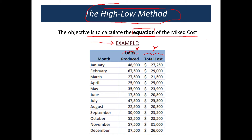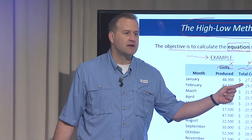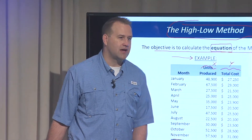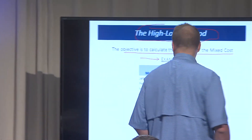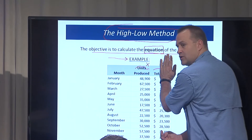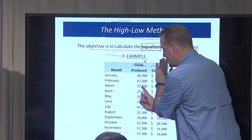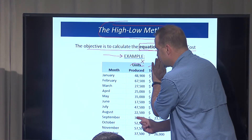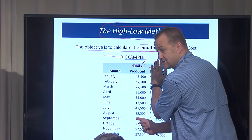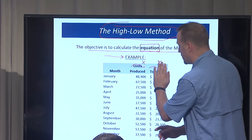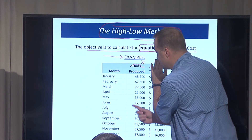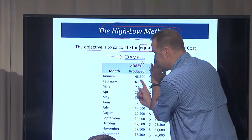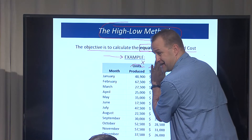Once we've identified x and y, what we want to do is cover up the y's — don't even look at them. Just look at your x's and determine which is the highest x and which is the lowest x. I'm not asking which is the highest y and lowest y — cover up the y's so you're not even tempted to look at them.